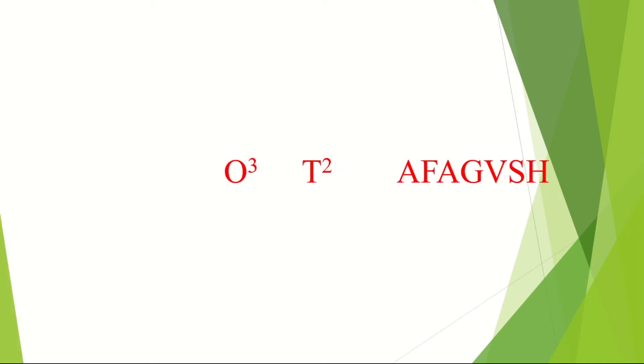Coming to the mnemonic, it is O cube T squared AFAGVSH. AFAGVSH can be pronounced as FAGAVIS. Now first coming to O cube, here you will have to remember these three letters: L, P, and C, just in case not to get confused which nerves come first and which nerve comes second.